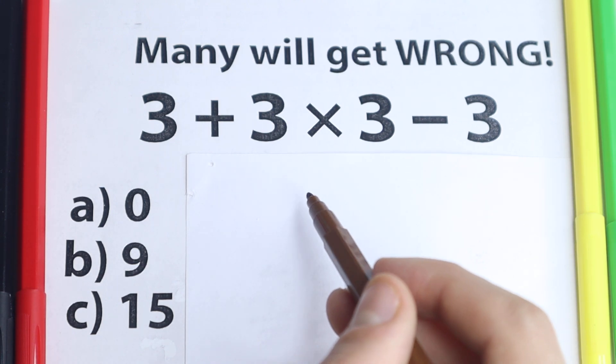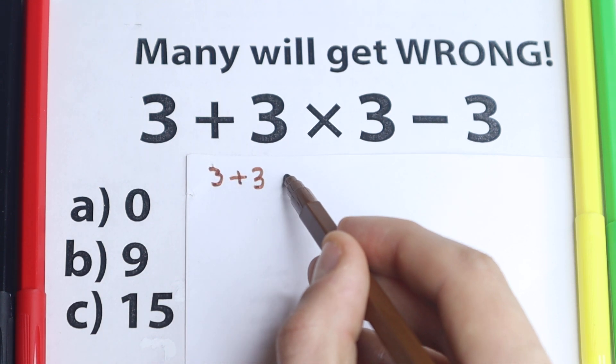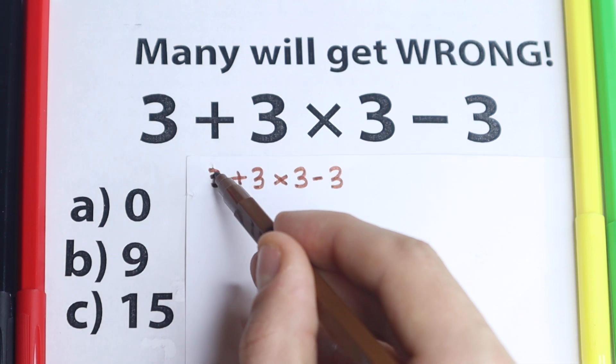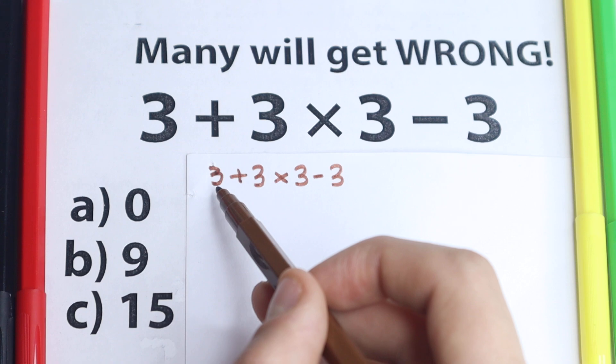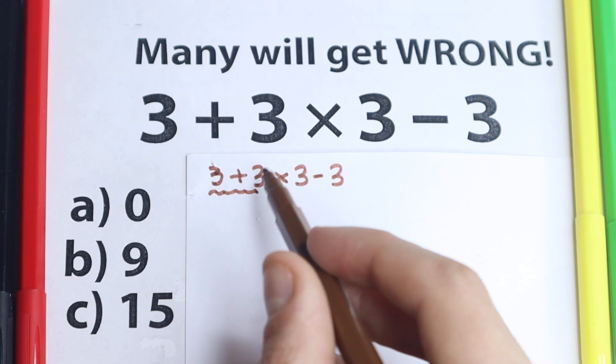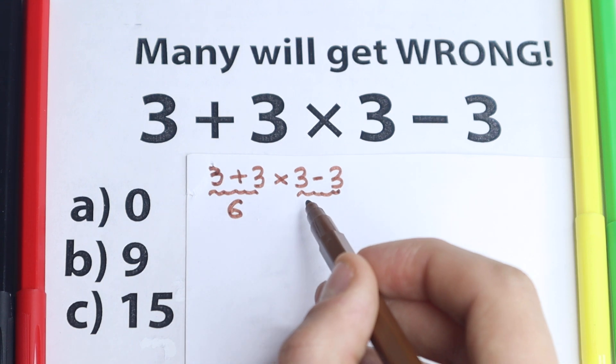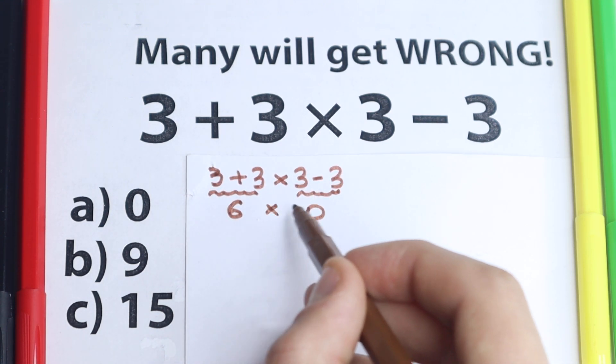First of all I want to write this solution. We have 3 plus 3 times 3 minus 3. I feel like one part of you solve it like that. They say okay let's go from left to right real quick. We have 3 plus 3 equal to 6, and 3 minus 3 on the right hand side equal to 0, and 6 times 0 equal to 0.